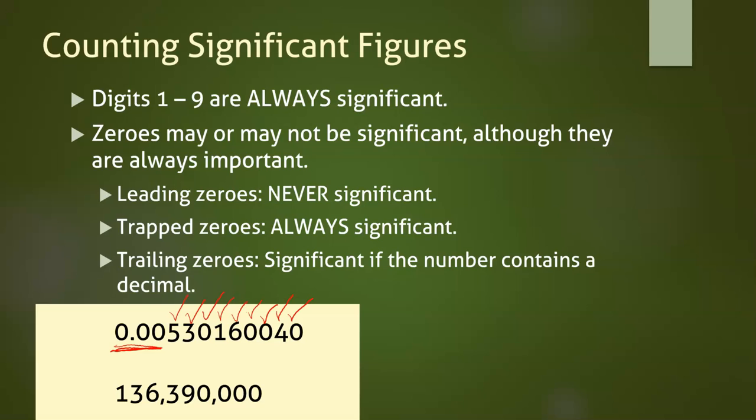In our second example, the one, three, six, three, and nine are all significant. That leaves us with four trailing zeros at the end. There is no decimal given in the number, and so those trailing zeros are not significant. The number has five sig figs.